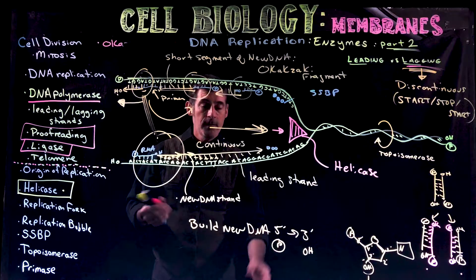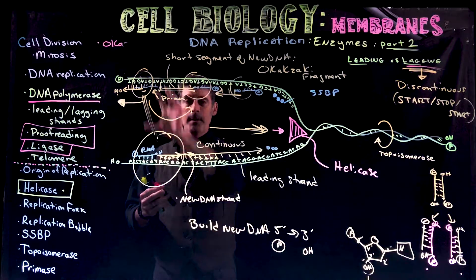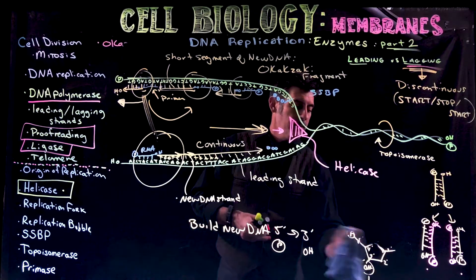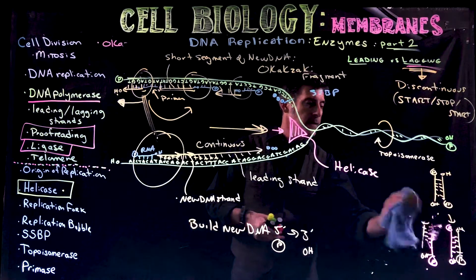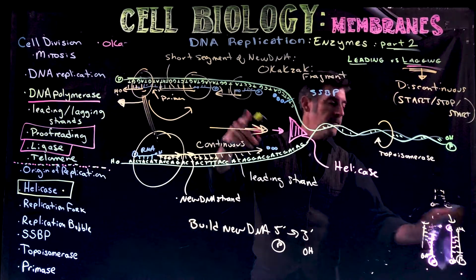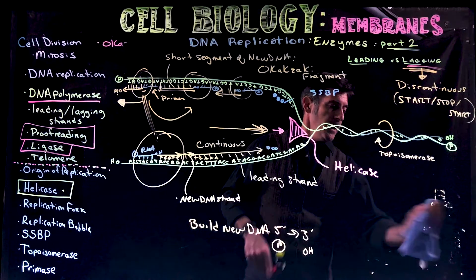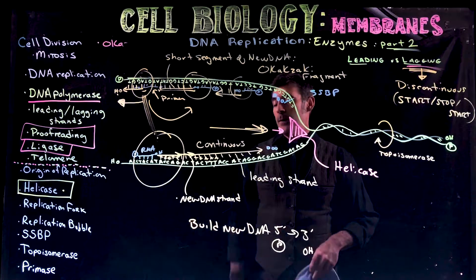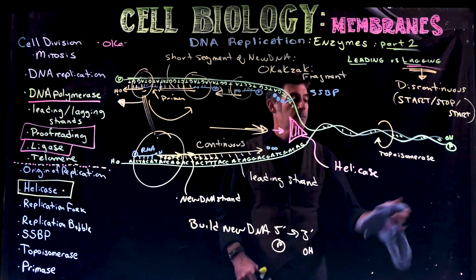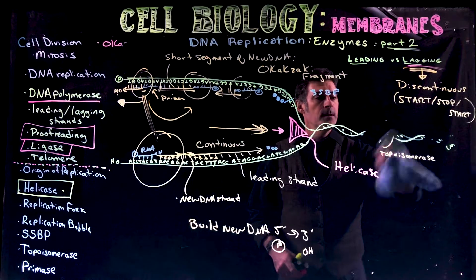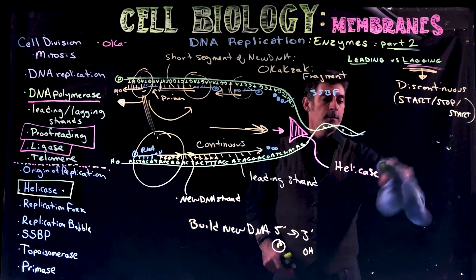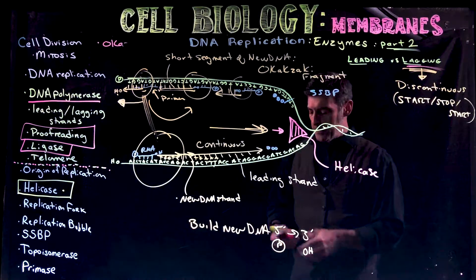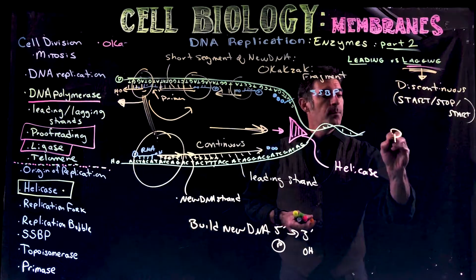Once the DNA has been made, the process isn't done. We have at least one problem we can recognize immediately: the primers. They have to be removed. So there's a process to look at called proofreading.